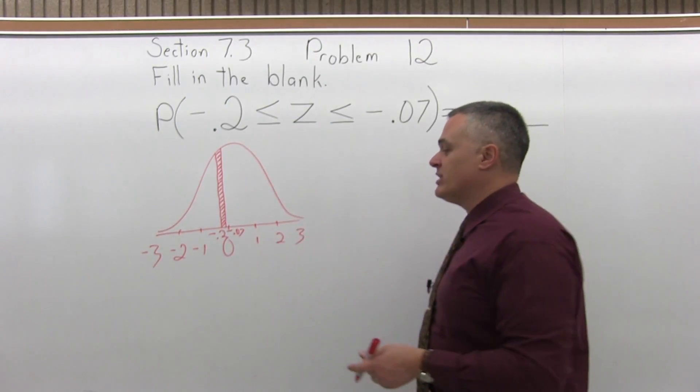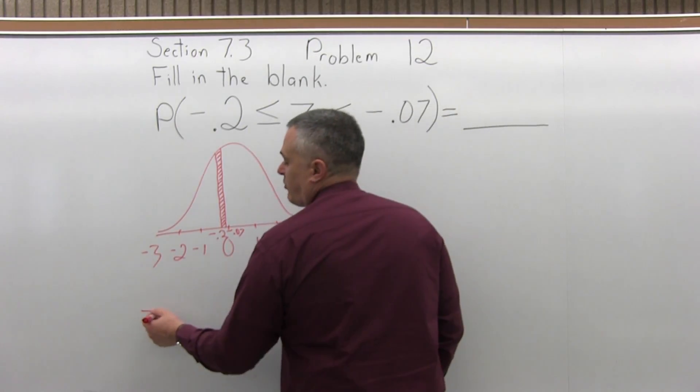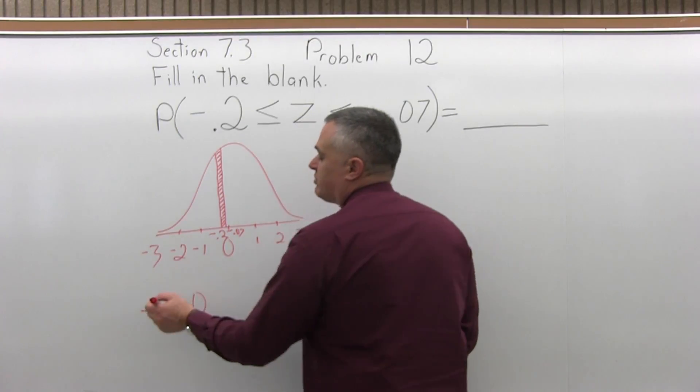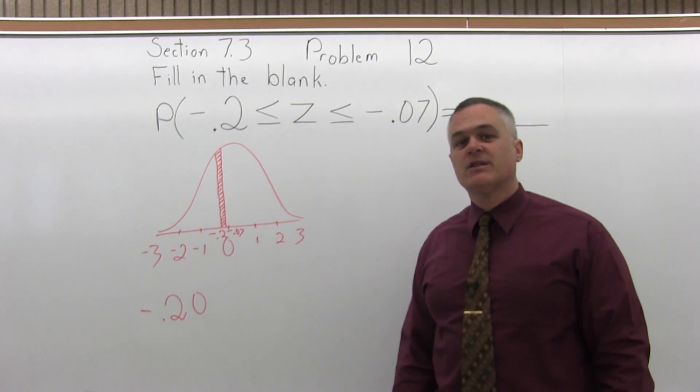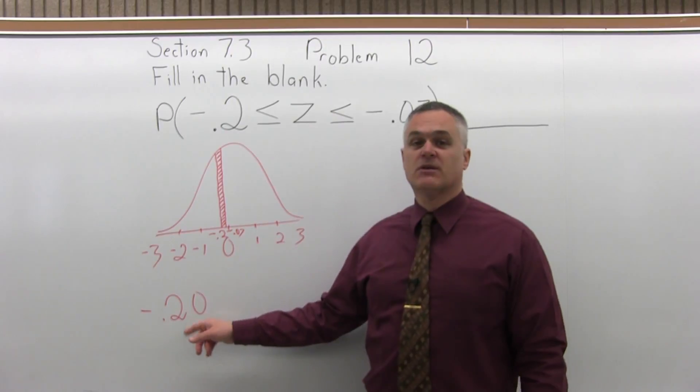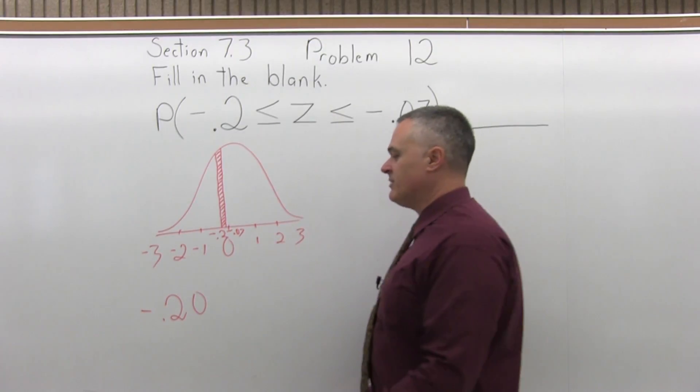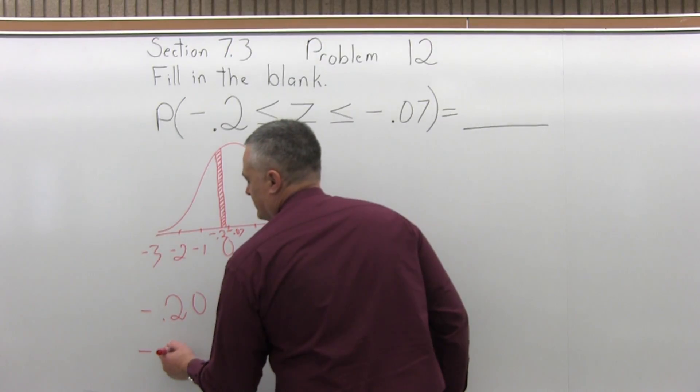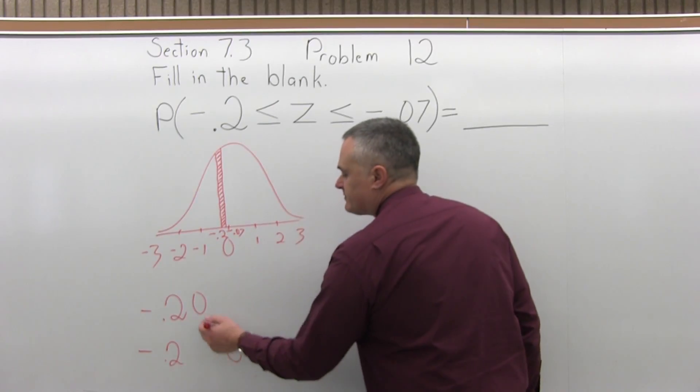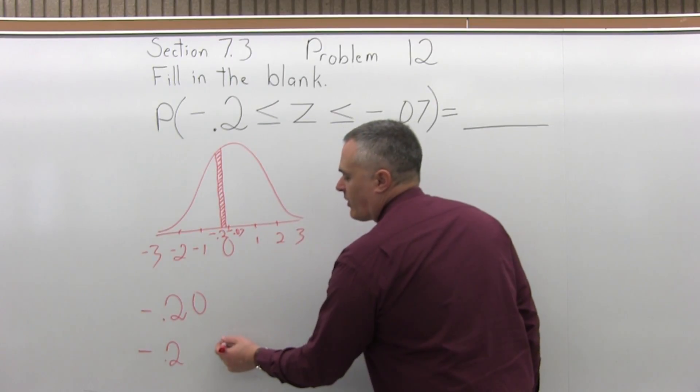So first, negative 0.2. Look that up. Step one, write it so that it has two places after the decimal. So I'll write that negative 0.2 as negative 0.20. That way I have my two places after the decimal. The next step is I split that number into two parts by pulling off the rightmost digit.